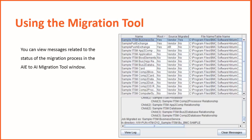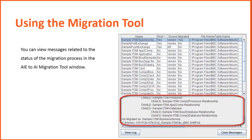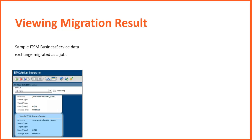Wait until the migration activity gets completed. The status and the activity details of the migration are displayed in the pane below the exchanges table. After the migration is complete, you can view the data exchange converted into a job. Open the Atrium Integrator and verify if sample ITSM Business Service Data Exchange is now available as a job.